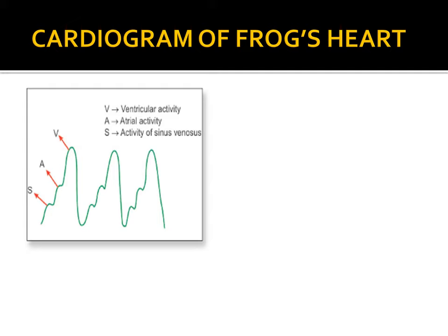Now the cardiogram of the frog's heart. As shown in the previous video, the cardiogram is recorded on a drum. It shows upstroke and downstroke patterns. The first upstroke is due to contraction of sinus venosus and the downstroke is relaxation of sinus venosus. The next upstroke is contraction of atria and downstroke is relaxation of atria. Then the upstroke is contraction of ventricle and downstroke is relaxation. So S is activity of sinus venosus, A is activity of atria, and V is activity of the ventricle. When recording at a drum speed of 1.2 mm per second, we get this full cardiogram.